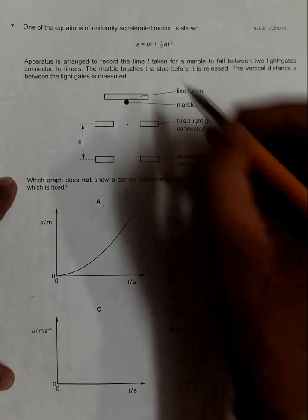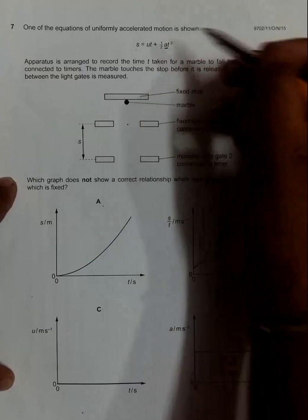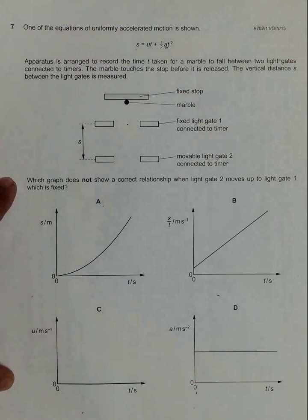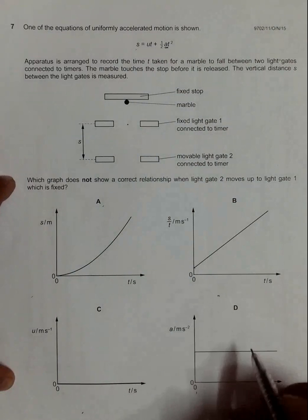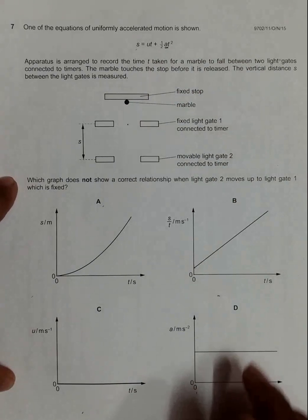We have a strong assumption here that a is constant. Similarly, if you go through choice D, a is constant. So a should be constant in this case because it is equal to the acceleration due to gravity. This choice is also correct.